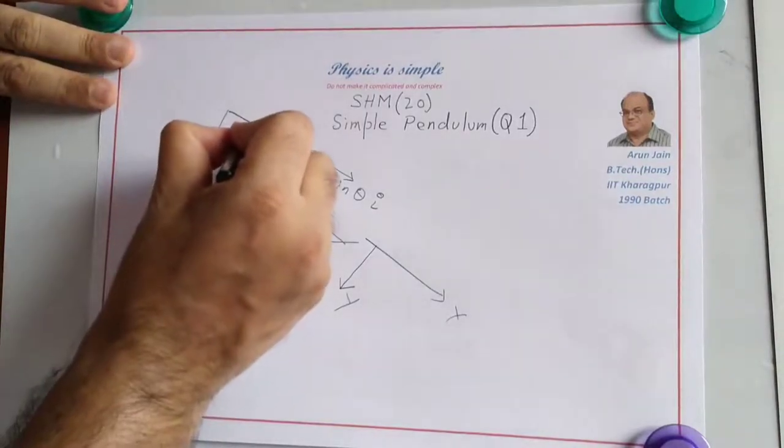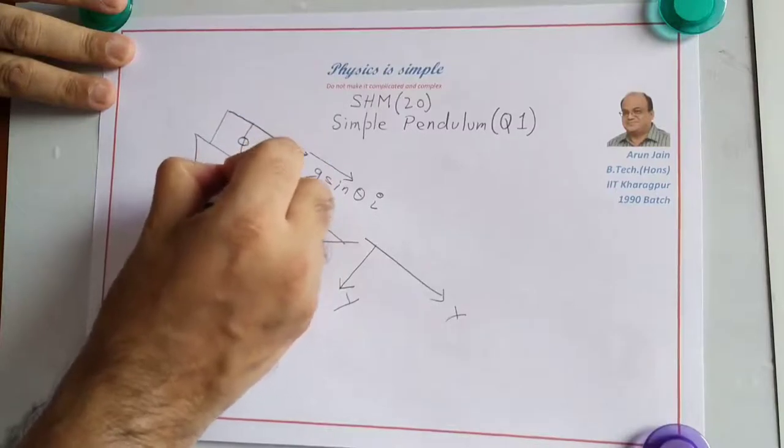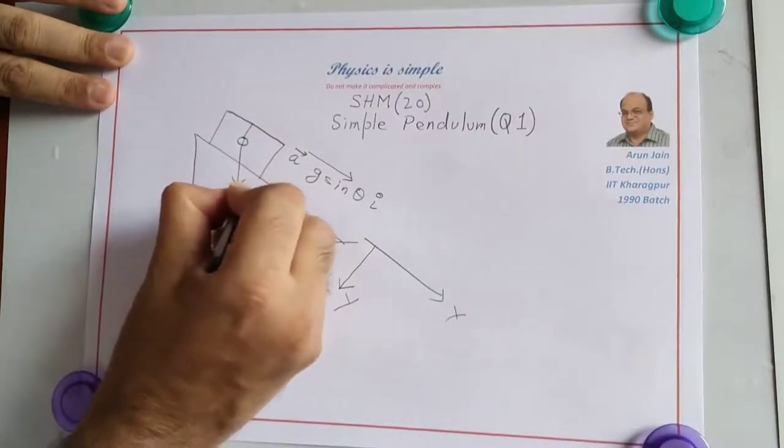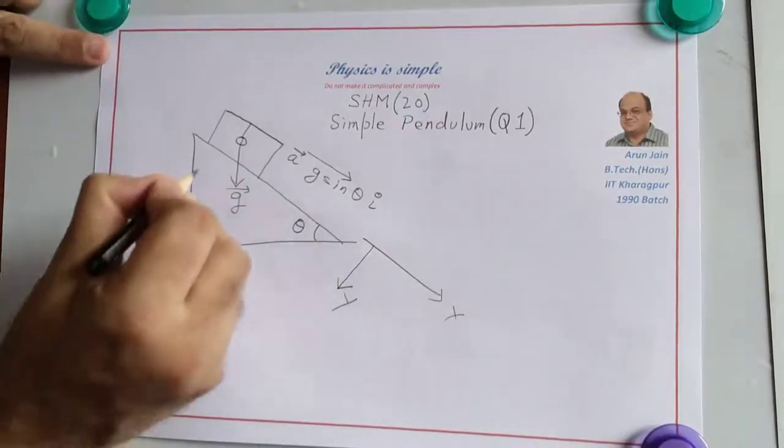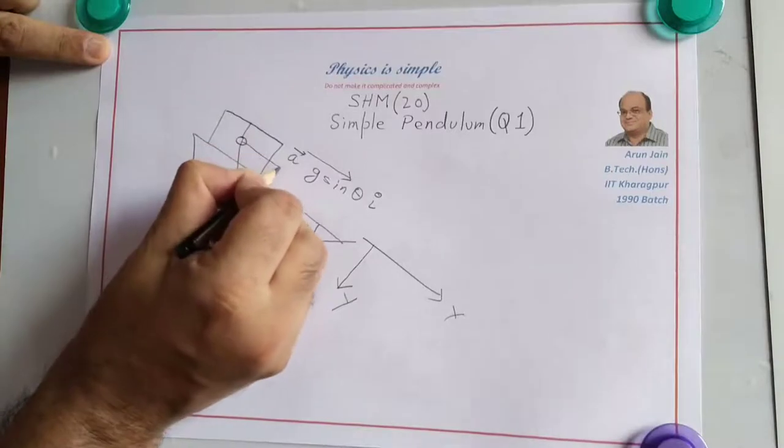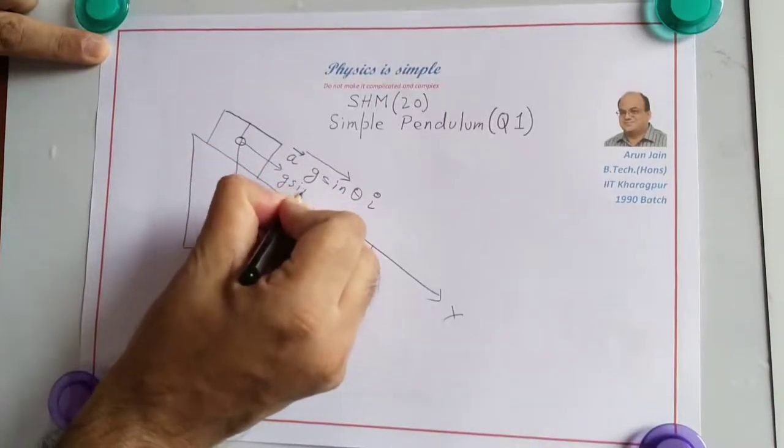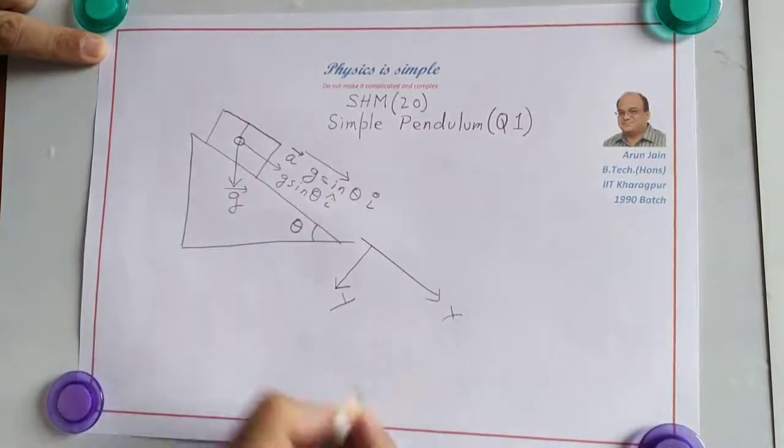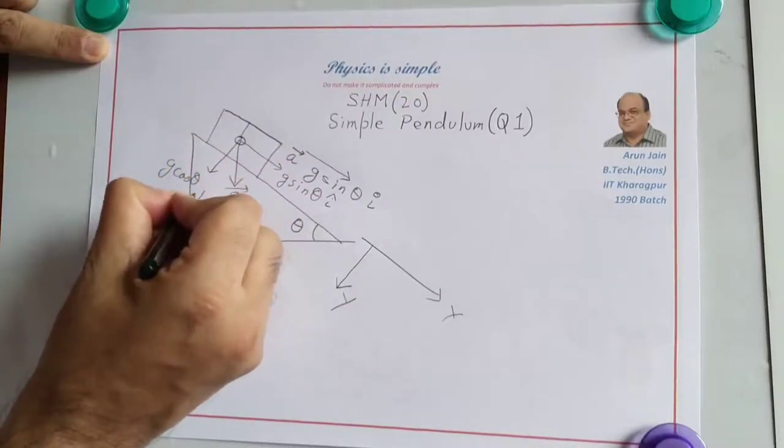This pendulum is acted upon by G, acceleration due to gravity. That will be in this direction. This acceleration also we can resolve. This G we can resolve into two components. Here, G sine theta i-cap, because that is the x-axis. And here, G cos theta j-cap, because we have called that as the y-axis.